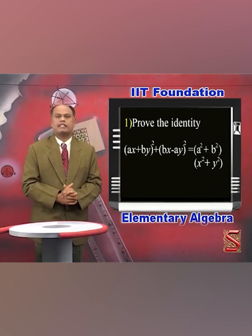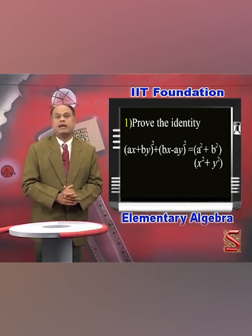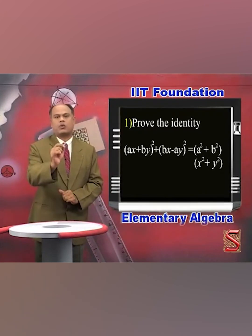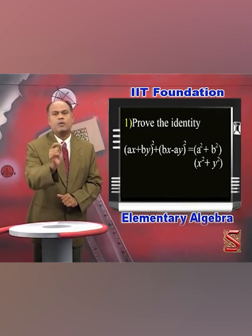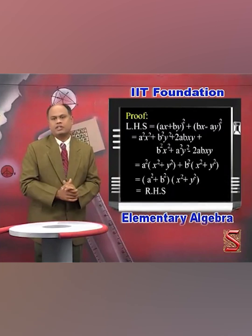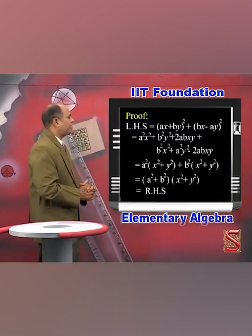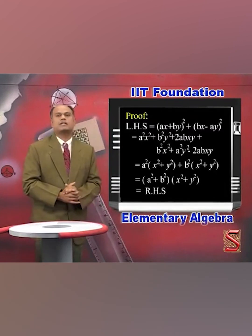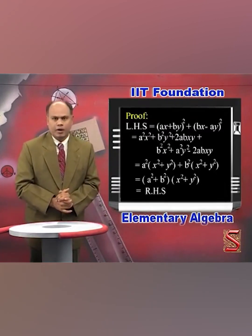We need to prove that (Ax + By)² + (Bx - Ay)² equals (A² + B²)(x² + y²). The proof goes this way. First of all, we will take the left hand side, that is (Ax + By)² + (Bx - Ay)².